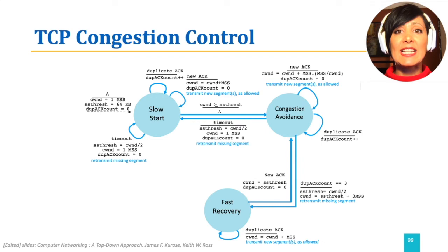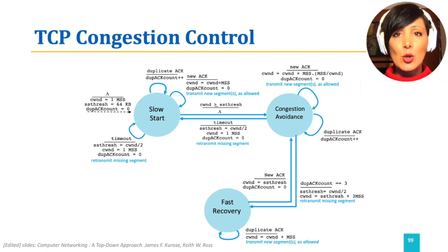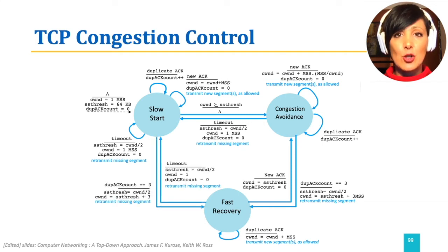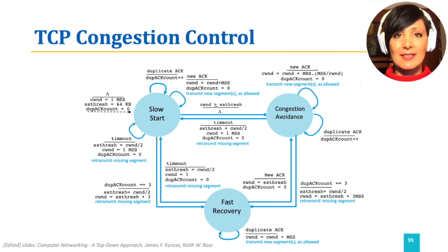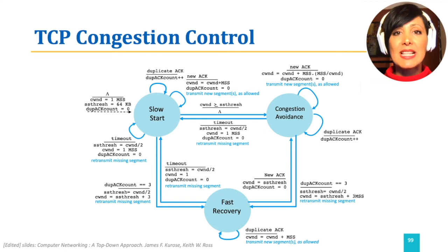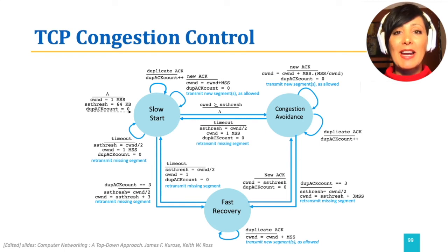Reaching 3 duplicate ACKs will indicate another triple duplicate ACK, which results in setting SS threshold to half of the congestion window size, setting the congestion window size to this new SS threshold plus 3, and going to slow start. A timeout event in any of the states will cause CWND to equal 1, the SS threshold to be set to half of CWND, and a return to slow start.